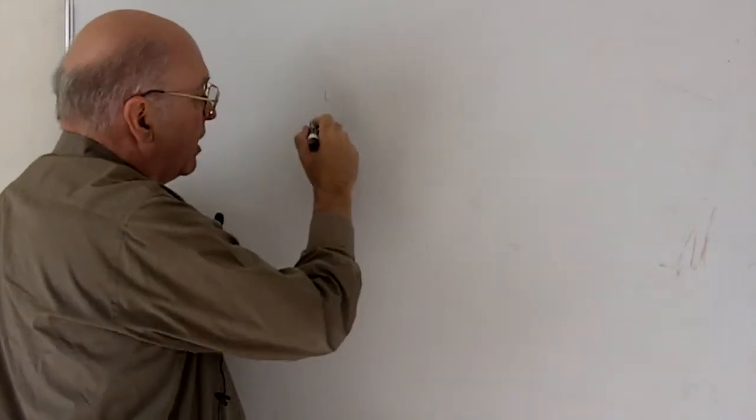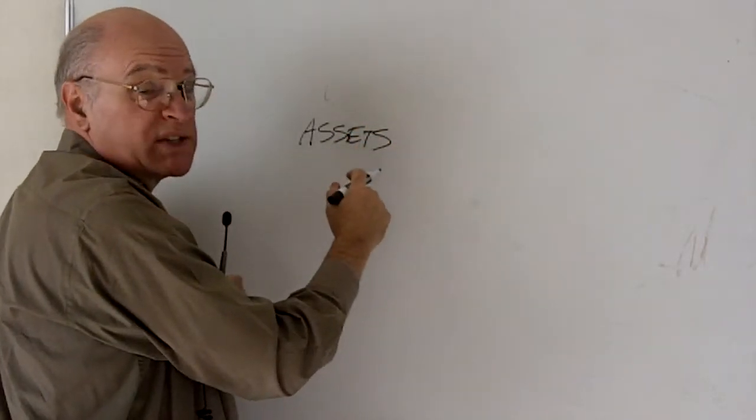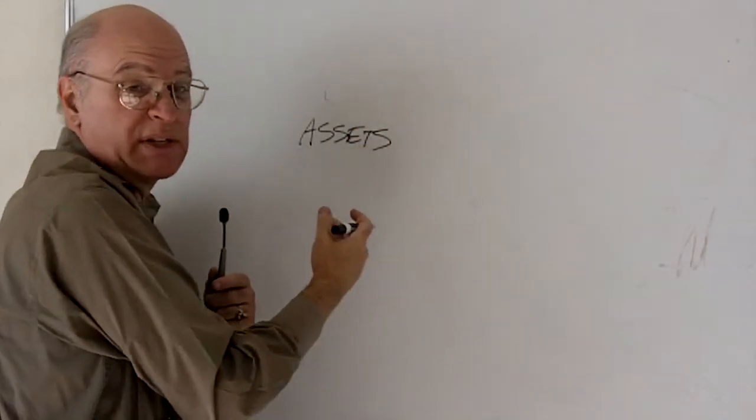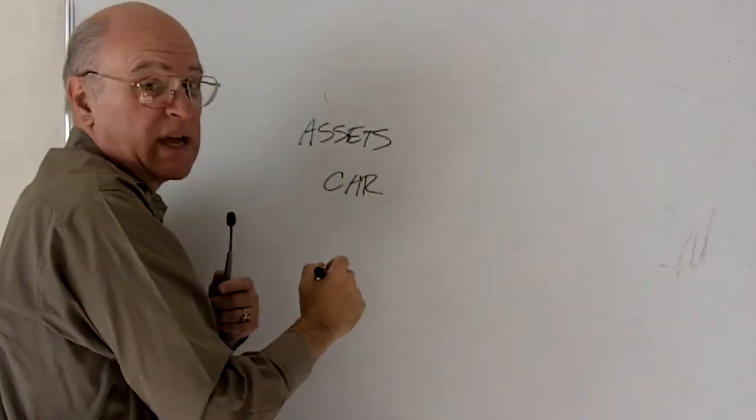In our balance sheet, on one side, we show assets. This is really the what side. We see things. For instance, in our previous video, we had a car that was an asset.